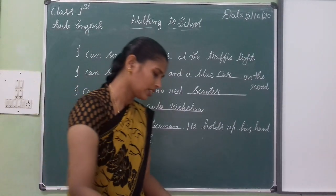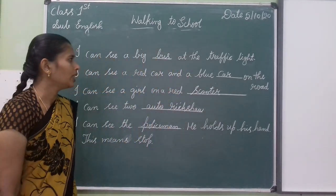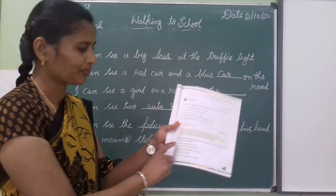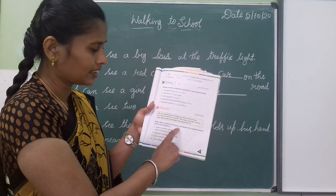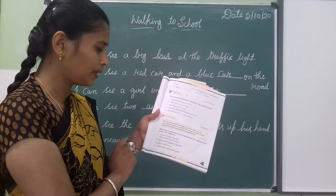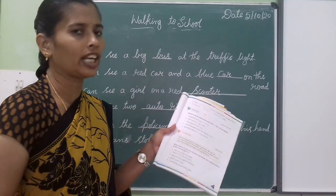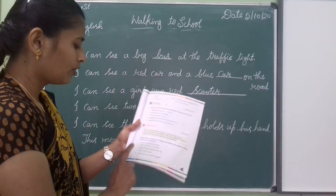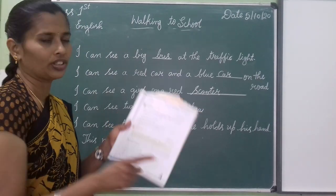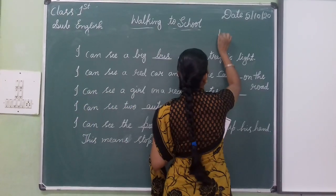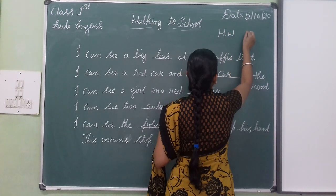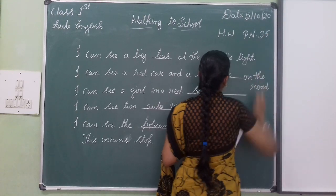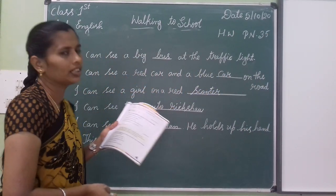Okay children, today's homework: this is the punctuation exercise. Write these sentences with correct capital letters in the correct place. Five sentences are there — write each one time. Page number 36, homework — five sentences with capital letters.